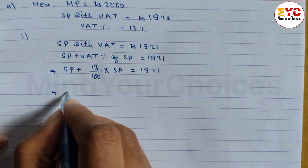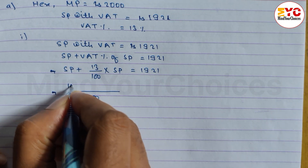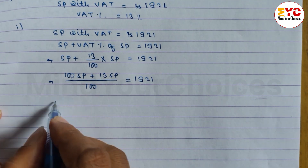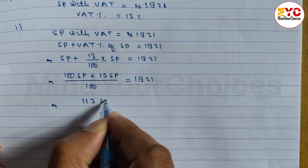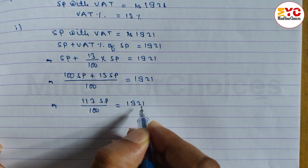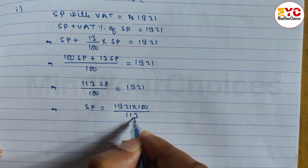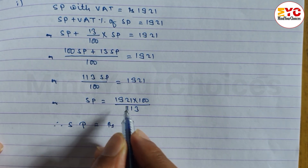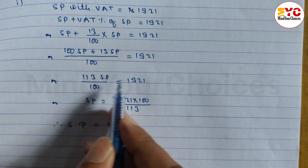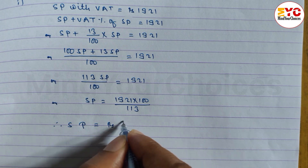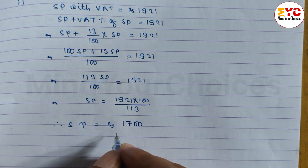Taking LCM: 100SP + 13SP = 1921 × 100, giving us 113SP / 100 = 1921. Therefore SP = 1921 × 100 / 113. Calculating 1921 × 100 divided by 113, we get 1700. So SP = Rs. 1700. That is the selling price excluding VAT.